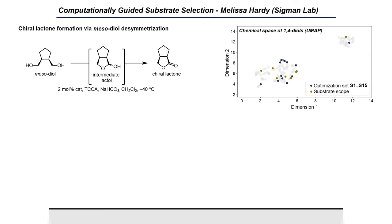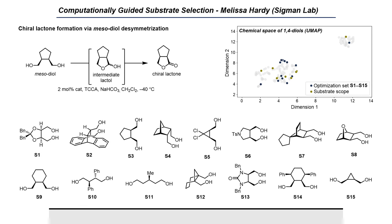We teamed up with Melissa Hardy from the Sigman Group at the University of Utah. Melissa analyzed and clustered all commercially available mesodiols using molecular fingerprint descriptors and a UMAP for dimensionality reduction. Guided by this representation of the mesodiol chemical space and synthetic availability, we selected 15 substrates for our optimization set, featuring various heterocyclic and bicyclic structures, simple monocyclic structures of various ring sizes, a tetrasubstituted diol, a linear diol, and even a 1,5-diol to enhance chemical diversity. The optimization set featured many different molecular shapes and potential secondary binding sites, with the diol substructure as the sole molecular motif conserved across all substrates.